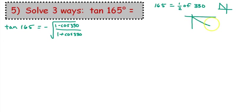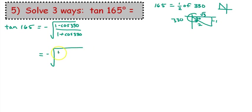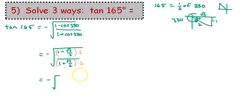Let's draw a reference triangle for 330 — a 30 degree reference angle. We've got a negative 1, a 2, and a square root 3. So the cosine of 330 is square root 3 over 2. Now we have the opposite of the square root of 1 minus square root 3 over 2, over 1 plus square root 3 over 2. Multiplying by 2 over 2 inside the radical, we get the opposite of the square root of 2 minus square root 3 over 2 plus square root 3. That's a strange looking answer with multiple square roots inside a square root, and I'm going to leave it at this.